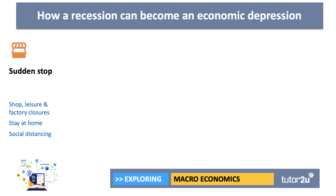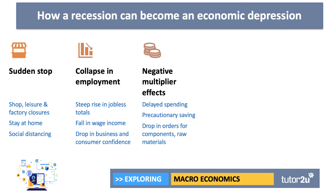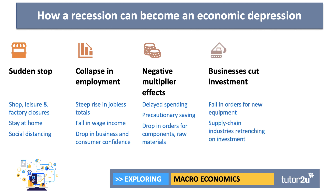There are lots of explanations as to how a recession can become a depression. We saw in March and April the lockdown — people told to stay at home, shops and factories closed down. That is now feeding through to an increase in unemployment. Wage incomes for households are falling, business and consumer confidence has taken a dive. Economists talk about negative multiplier effects: if employment and incomes are declining, people delay spending, perhaps saving more out of fear of unemployment. That drop in spending leads to a fall in orders for component parts, raw materials, and other items, causing the economy to contract even further.